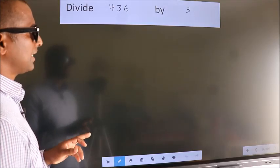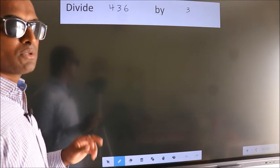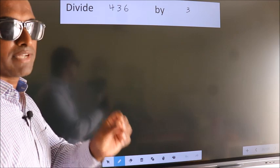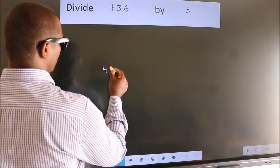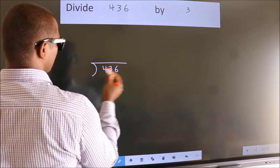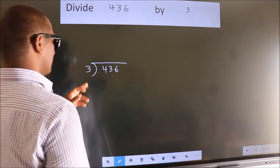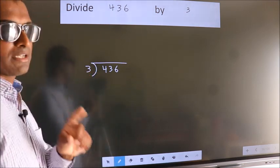Divide 436 by 3. To do this division, we should frame it in this way: 436 here, 3 here. This is your step 1.